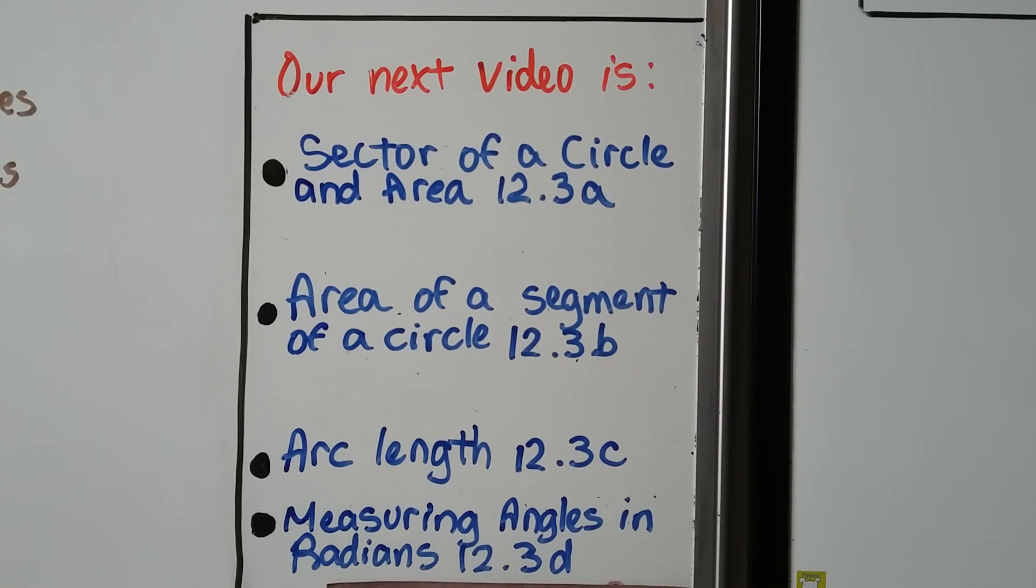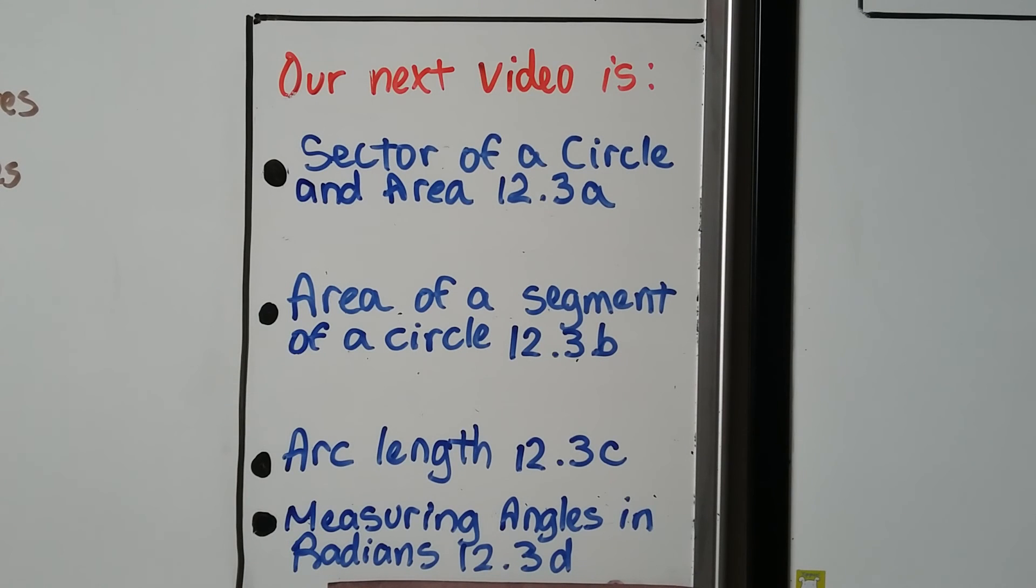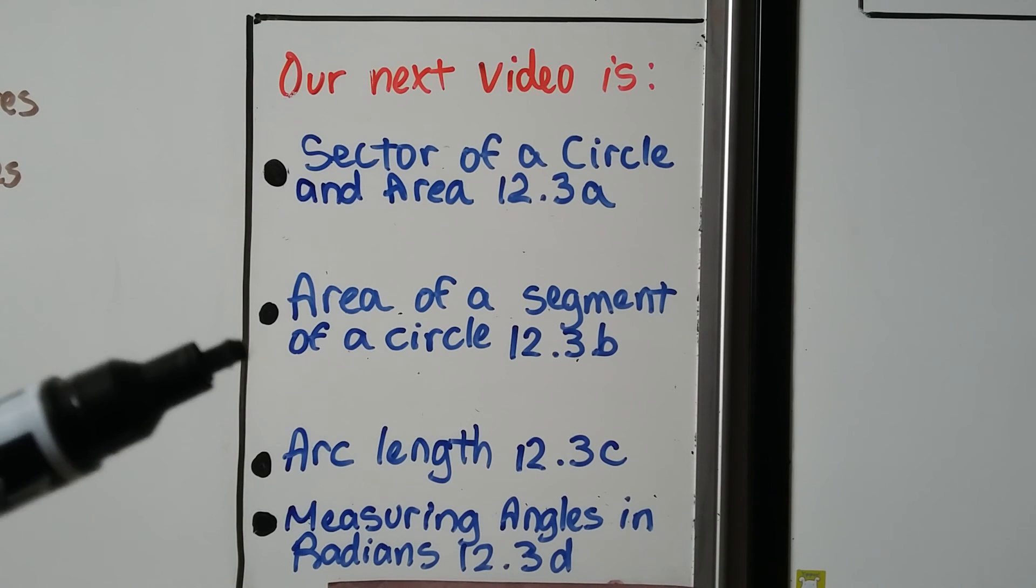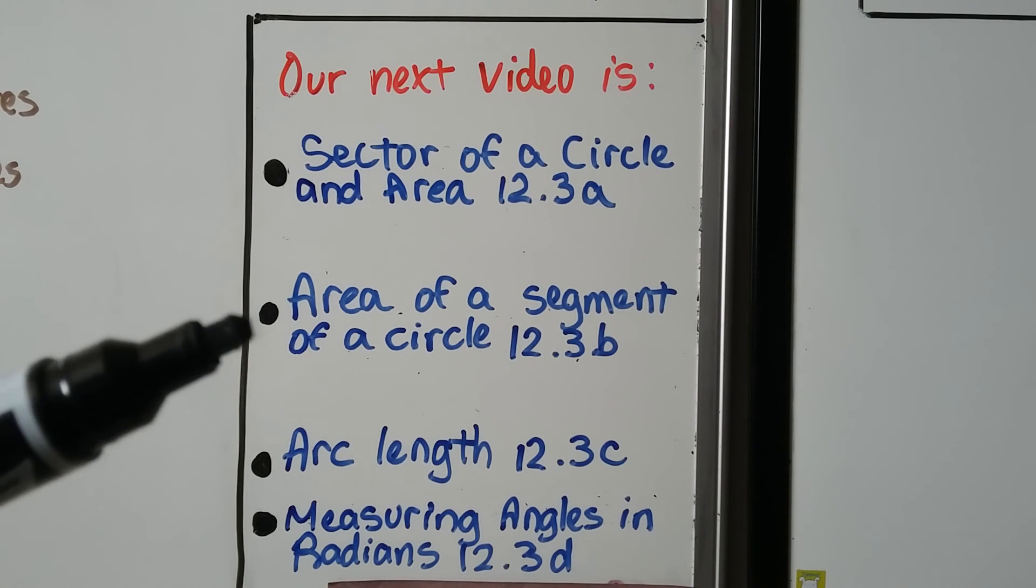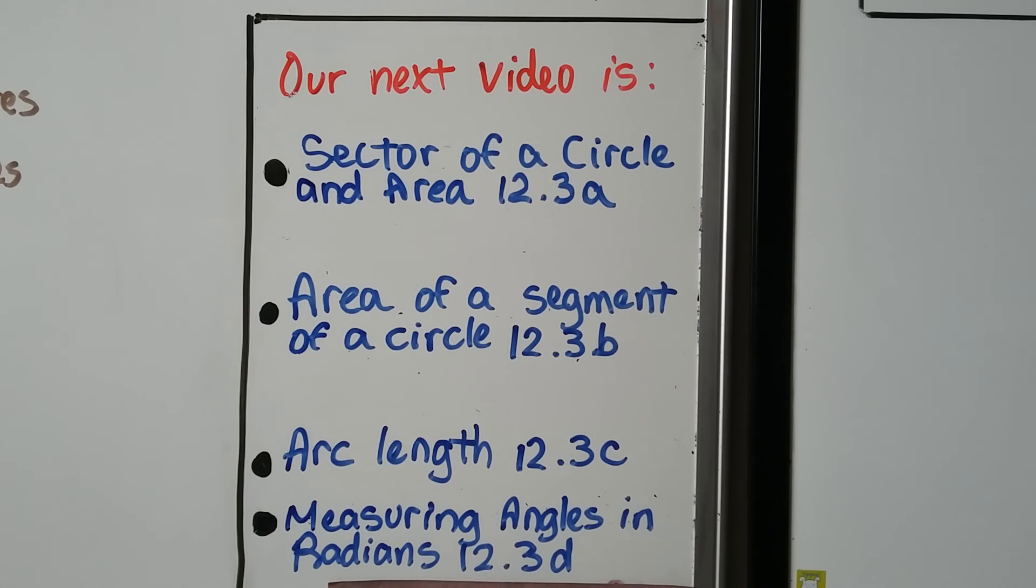So our next video is going to be for 12.3, which is split into A, B, C, and D, so that you don't have an hour-long video to watch. We're going to discuss sector of a circle and its area in 12.3 A. Then we're going to do area of a segment of a circle, 12.3 B. Then we're going to talk about arc length, which we did a little bit in the last video, and we're going to discuss measuring angles in radians in 12.3 D.